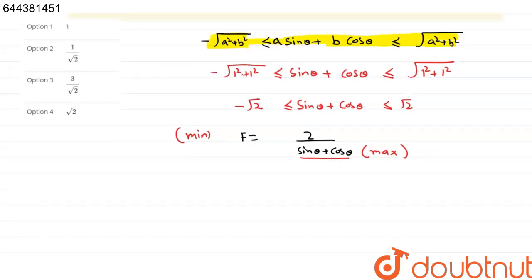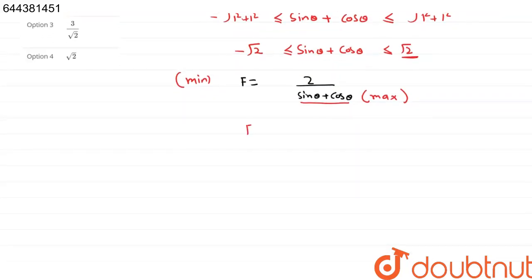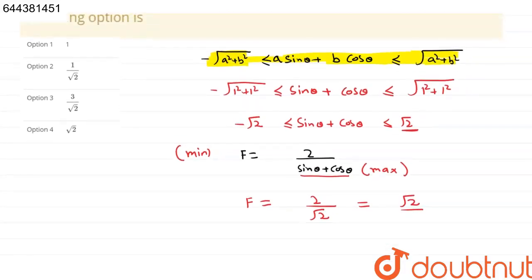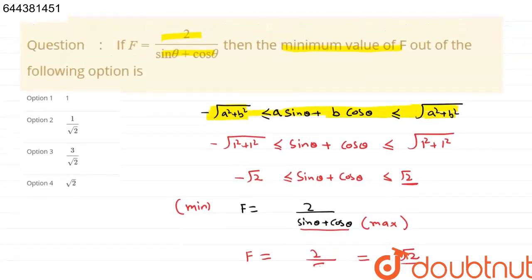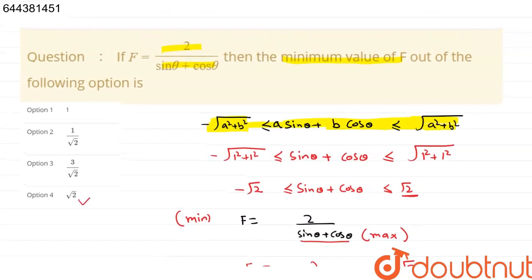It is root 2, plus root 2. So f is equal to 2 upon root 2, so it will be root 2. So from the given options, option 4 will be correct.